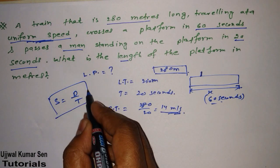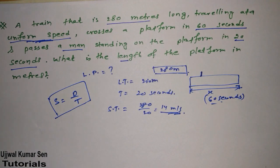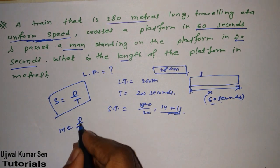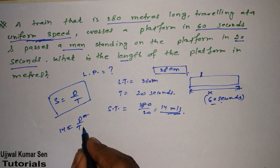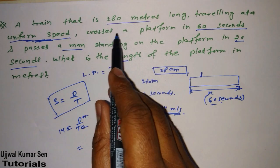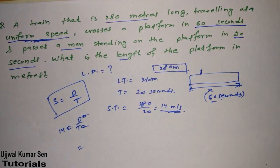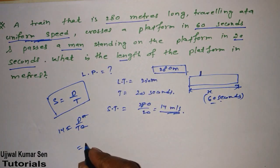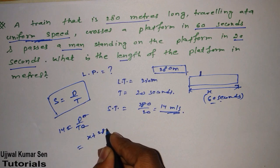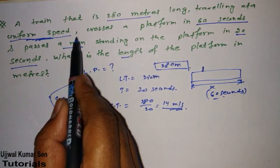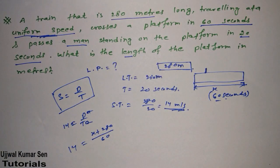Using the relation speed equals distance divided by time, we now apply it to the platform crossing. When the train crosses the platform, the total distance covered is the platform length plus the train length. So: platform length (x) plus train length (280), divided by time (60 seconds), equals the speed of 14 meters per second.